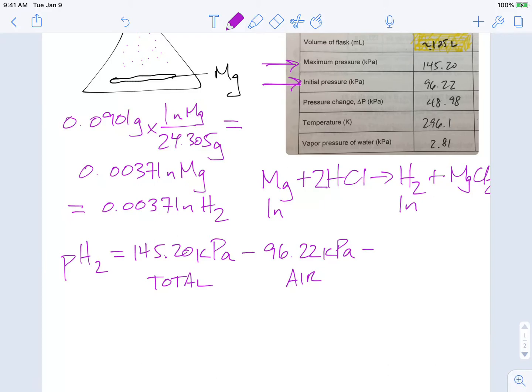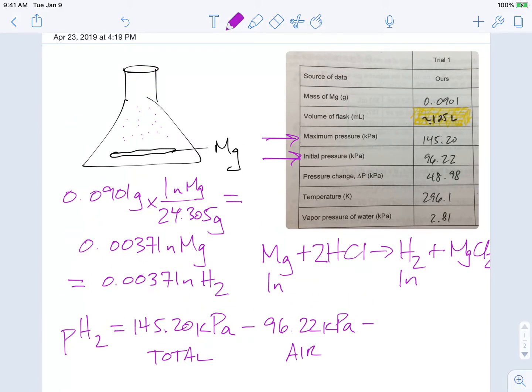So the maximum pressure was 145.20 kilopascals. And so what we're going to do, this is the total amount of pressure that the gases are putting onto the flask. Now, what we're going to do is we're going to subtract out the initial pressure and that's due to the air. This was 96.22 kilopascals. And this is from the air. And then we're also going to subtract out the vapor pressure from the water. So in our picture, one of the things I neglected to draw here was the solution that it's in. So this solution was hydrochloric acid and it was aqueous. So that means that it was in water.